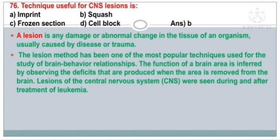A lesion is any damage or abnormal change in the tissue of an organism, usually caused by disease or trauma. The lesion method has been one of the most popular techniques used for the study of brain-behavior relationships. The function of a brain area is inferred by observing the deficits produced when the area is removed. Lesions of the CNS were seen during and after the treatment of leukemia.